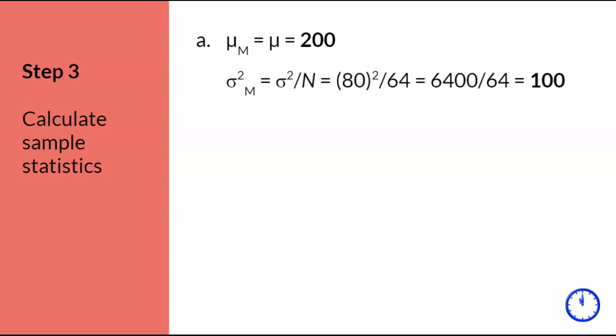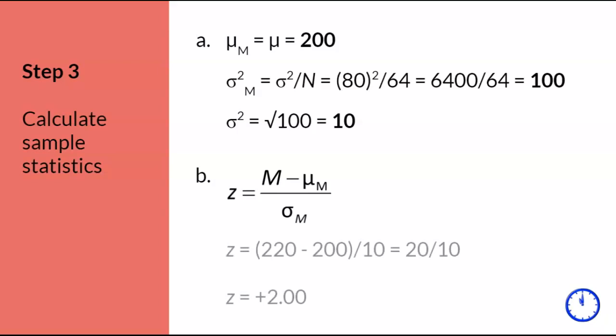then sigma squared M, or the variance of the distribution of means, and finally sigma, which is standard error. We will use the modified Z-score formula that allows us to compare our sample mean with mu and with sigma. We calculate using these values, and the Z-score for the sample is Z equals plus 2. The box indicates the final answer.